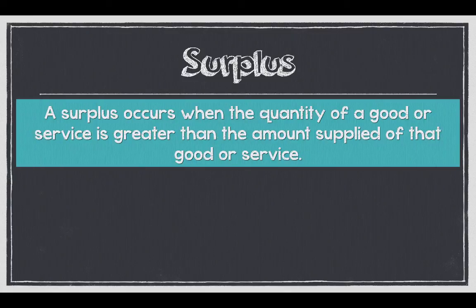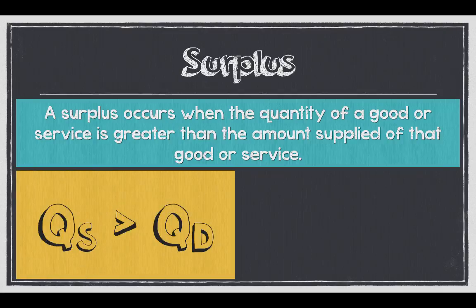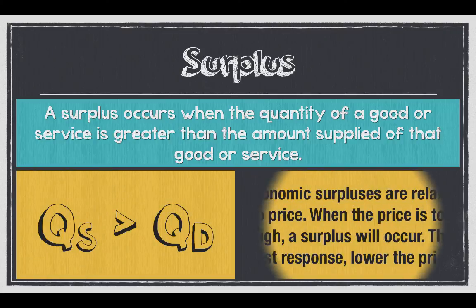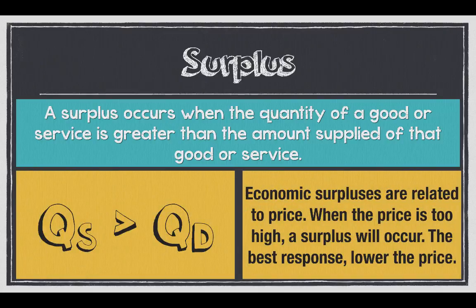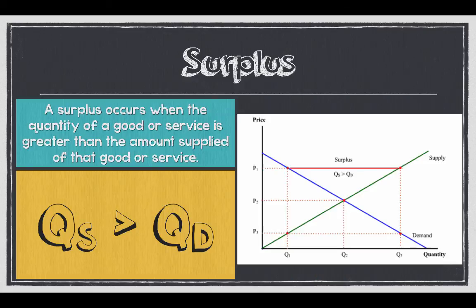Now we talk about surpluses. A surplus is when the quantity of a good or service supplied is greater than the quantity demanded. Economic surpluses are related to price — when the price is too high, a surplus will occur. The best response is to lower prices.